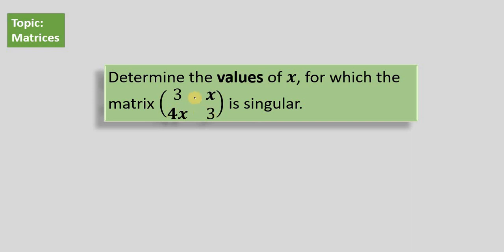So, we have a 2 by 2 matrix — in other words, we have 2 rows and 2 columns. Let's look at the general form of a 2 by 2 matrix. A matrix is basically a rectangular array of numbers. In this case, we have 2 rows and 2 columns, where A, B, C, and D are real numbers.